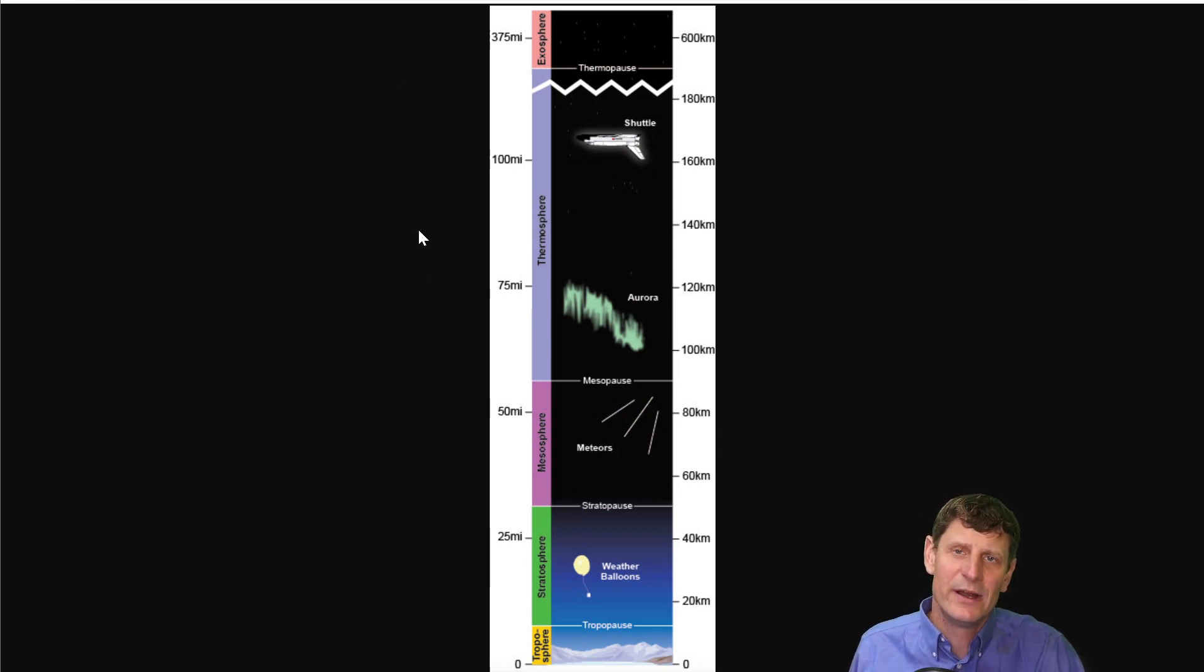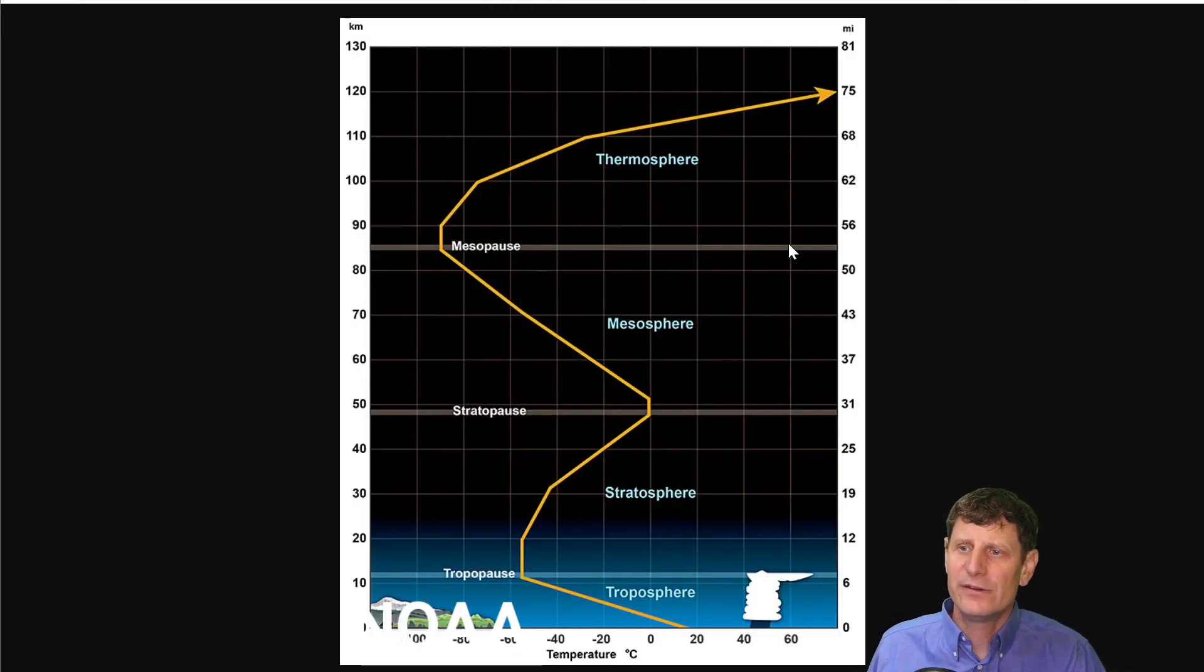Let's take a look at a diagram that helps us understand why these layers exist and how they're differentiated from one another. So this is a diagram showing us a temperature profile of each of these layers of the atmosphere. Notice now that we've got a diagram with a picture of clouds and the like here.